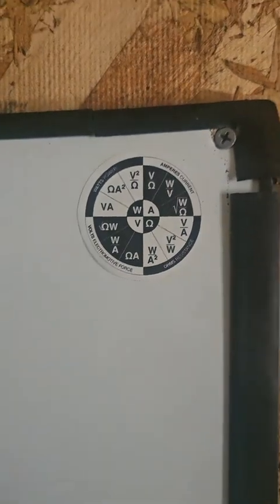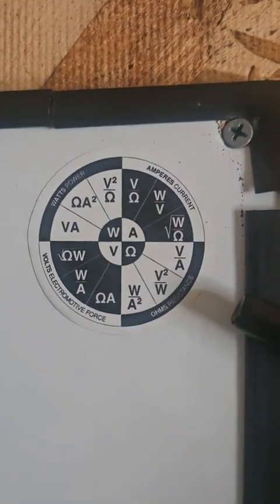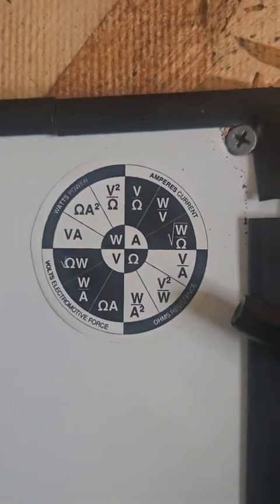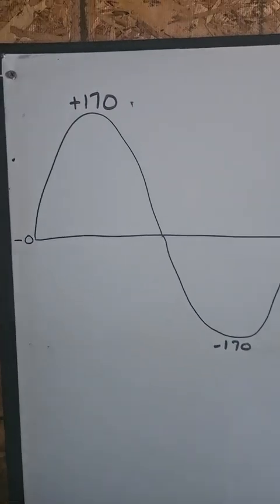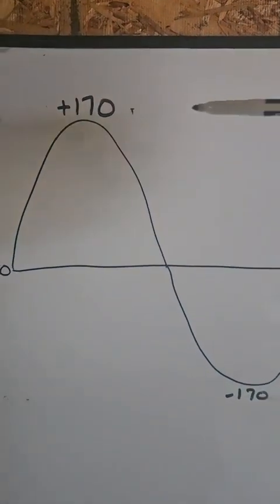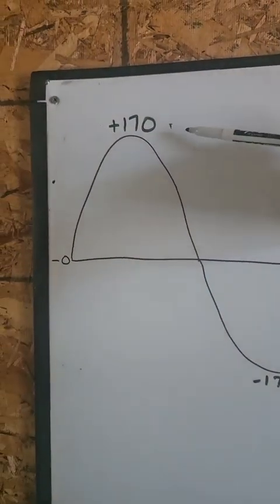I'm going to try to explain RMS using only 7th grade math. By the end, hopefully you'll understand why those formulas work for both AC and DC. So the first guess of where 120 is...